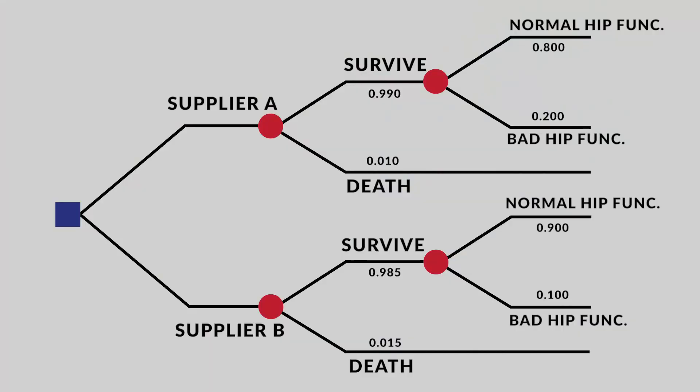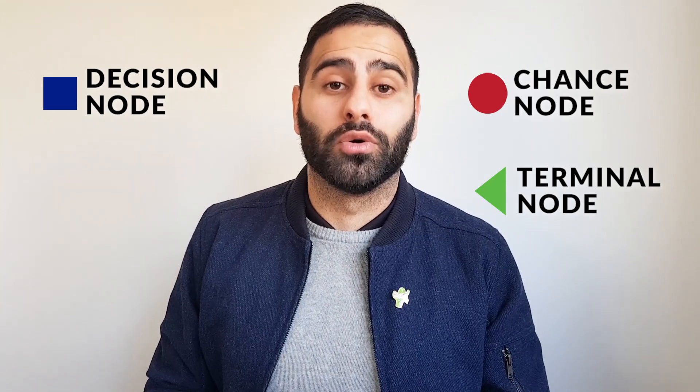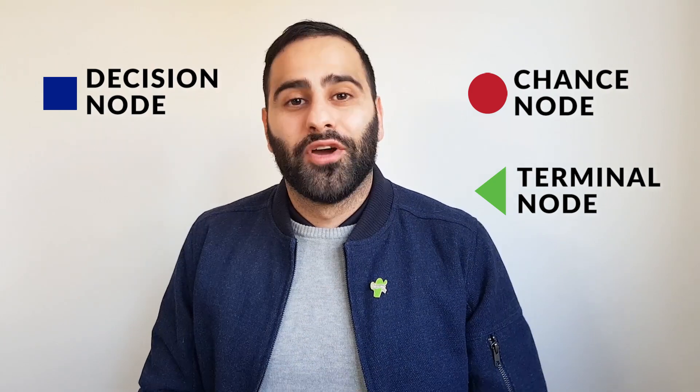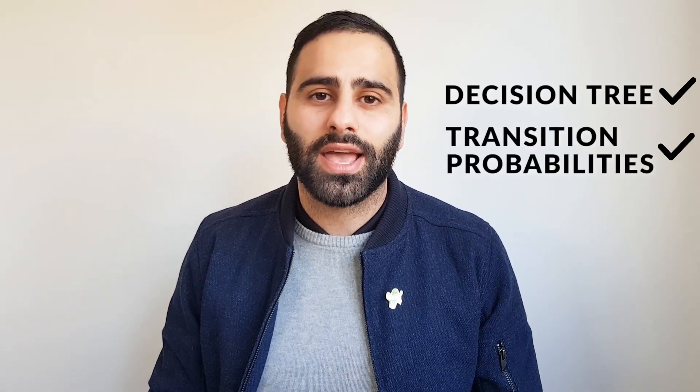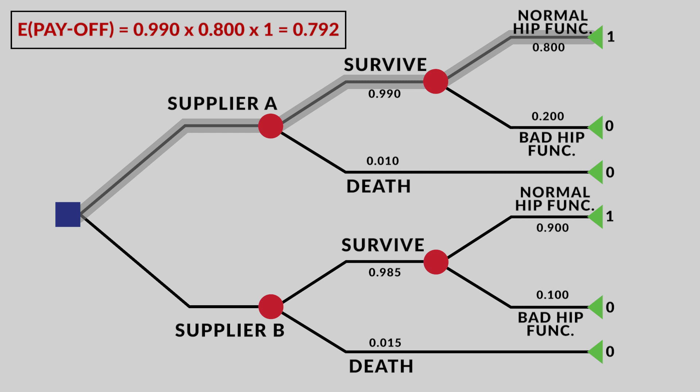If there's any other risk you want to account for, you can add it as a chance node. In our example we're interested in the probability of a patient returning to normal hip functioning, so we can add that here. Once you're happy with it, you can add terminal nodes. Terminal nodes indicate that the outcome we're looking for has been observed. We'll keep it simple and just have single payoffs. The payoff associated with returning to normal hip functioning is one, and the payoff for not achieving the outcome — or perioperative mortality — is placed at zero. Now that we have our decision tree, transition probabilities, and payoffs, we calculate the expected value at each terminal node weighted by the unconditional probability of reaching that node.